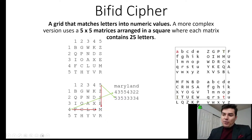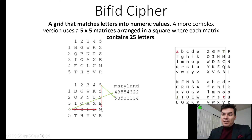If you're interested in learning how that works, you have the two rows here, or the horizontal columns, and the 4 matches the M, then this lines up with the 5, bringing it down to the M. So they just intersect there at that point, and that's how you're going to get the cipher text.